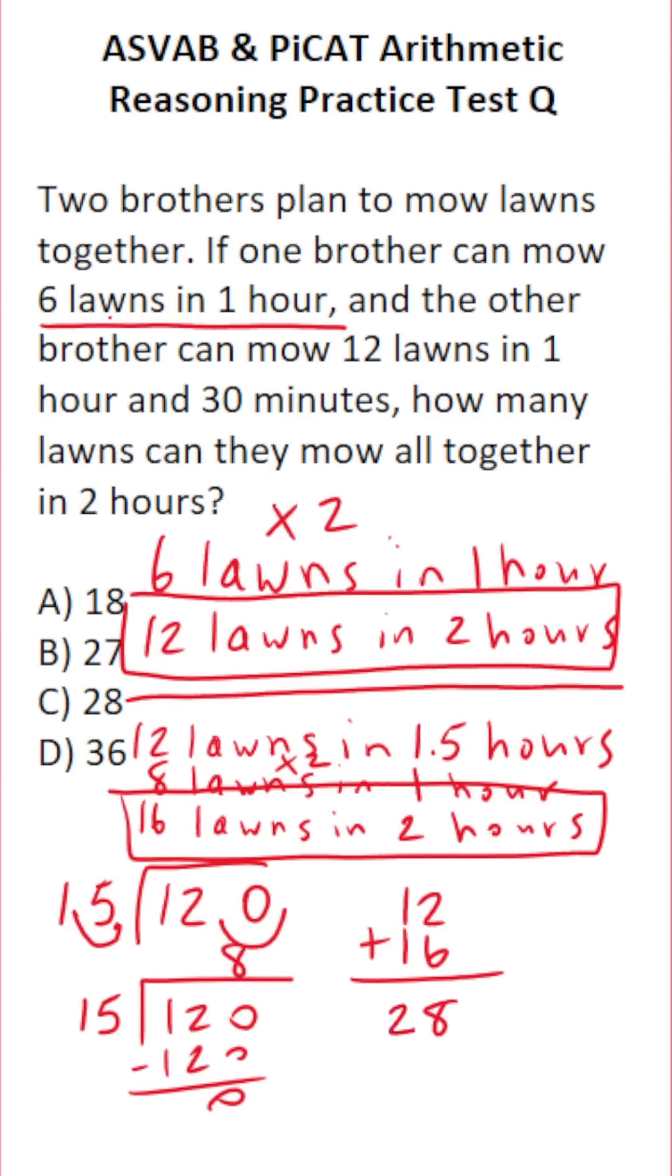2 plus 6 is 8. 1 plus 1 is 2. So all together, they can mow C, 28 lawns together in two hours.